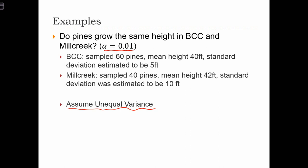So what do we know? Let's consider the Big Cottonwood Canyon as sample 1. So N1 equals 60, X bar 1 equals 40, and S1 equals 5. In Mill Creek, N2 equals 40, X bar 2 equals 42, and S2 equals 10.